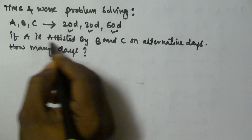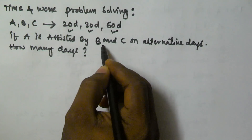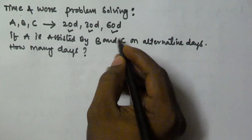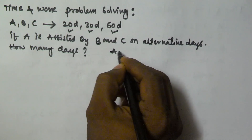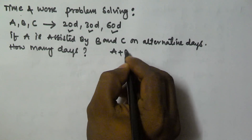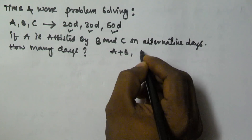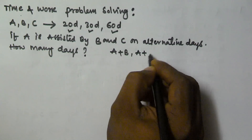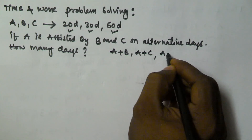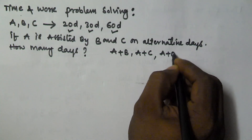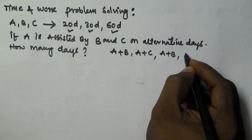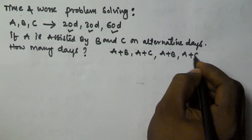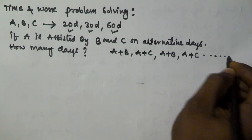If A is assisted by B and C on alternative days, that means on the first day A and B work together, on the second day A and C work together, on the third day A and B work together, and on the fourth day A and C work together, and so on.